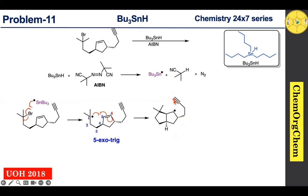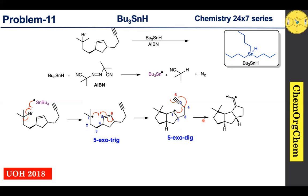Now this radical is going to react with the alkyne. Starting the numbering just like the previous case, formation of the small ring system is favored over the larger ring system. Therefore, this radical also reacts at the 5th position via 5-exo-dig cyclization, which leads to generating the next radical intermediate.